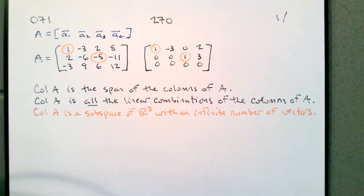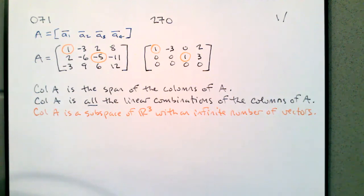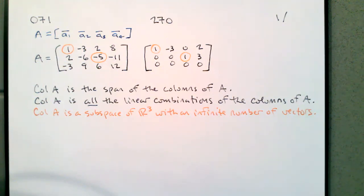Today I want to clarify some things about vector spaces, subspaces, dimension, and coordinates. Specifically, the difference between the column space of a matrix and a basis for the column space.